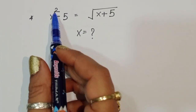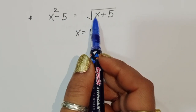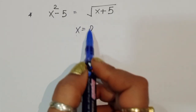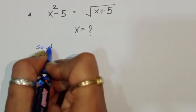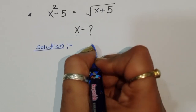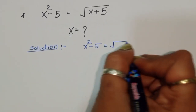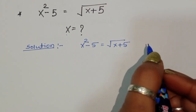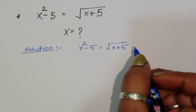The question is: given x² - 5 = √(x + 5), we have to find the value of x. Let's see the solution. x² - 5 is equal to square root of x + 5.